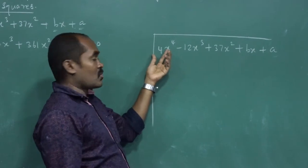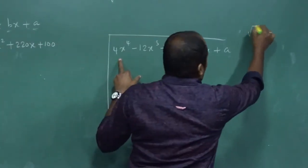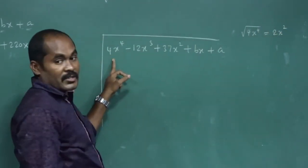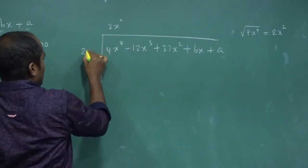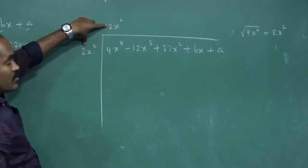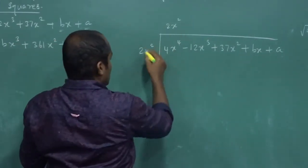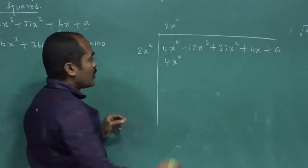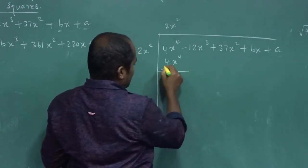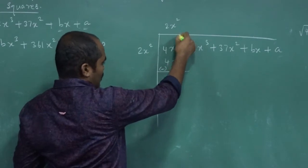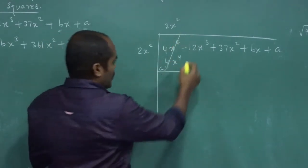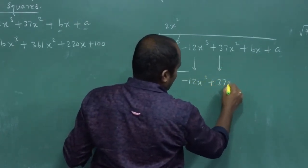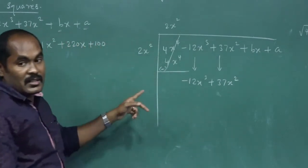Our first step is the square root of the first term. Square root of 4x⁴ is 2x². So write 2x² here and also here in the divisor. 2x² into 2x² is 4x⁴. Sign change makes this minus 4x⁴, so 4x⁴ minus 4x⁴ cancel. Write down the next two terms: minus 12x³ plus 37x².